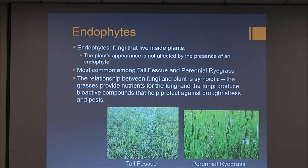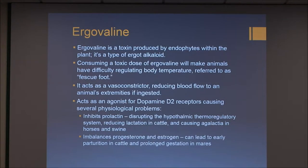The fungi get nutrients from the grasses, and the fungi produce bioactive compounds that can protect the grass from things such as drought stress and pests. Ergovaline is one type of toxin that can be produced by endophytes. It's a type of ergoalkaloid.